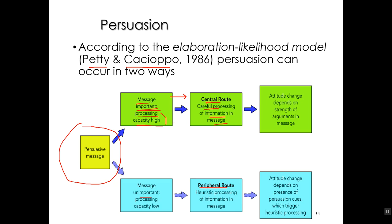The other factor is processing capacity — whether we have a high level of mental capacity available. Implicit processing capacity is about two or three channels. If I'm already thinking about two or three things, I'm at my limit. So even if the message is important, if I'm thinking about other things, I may not have the processing capacity, and I'll process it down in the peripheral route rather than the central route — because the central route is more explicit and the peripheral route is more implicit.